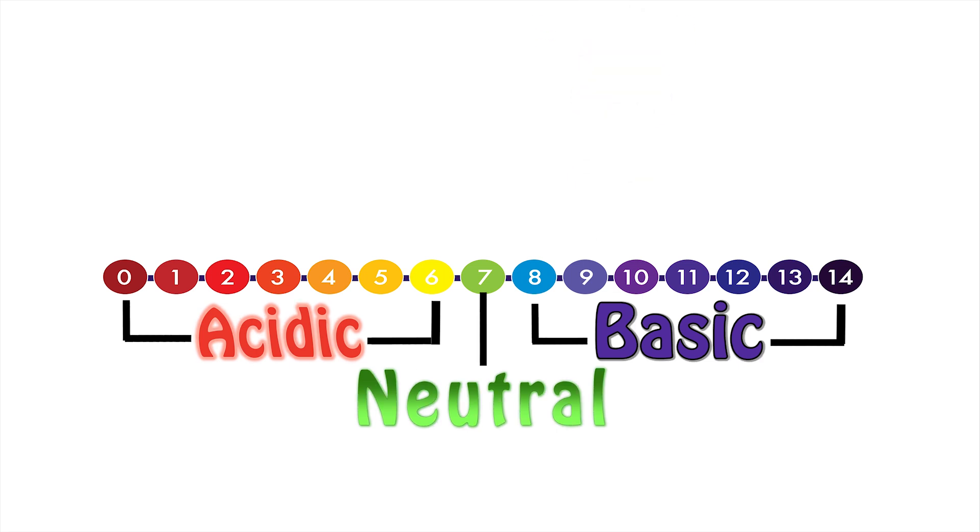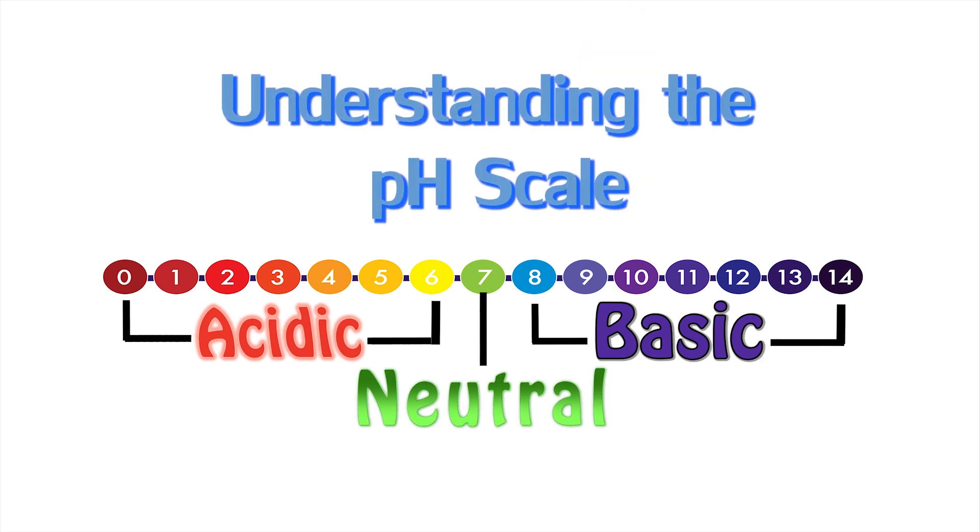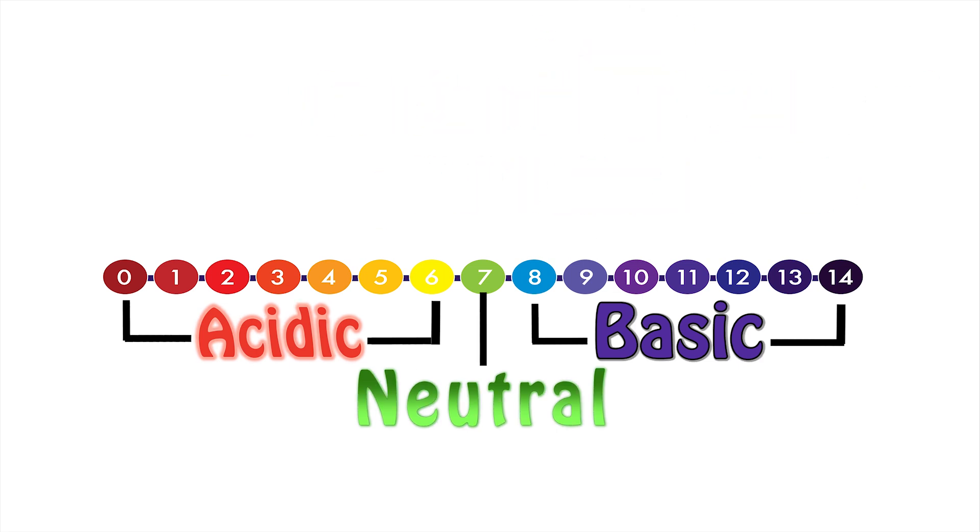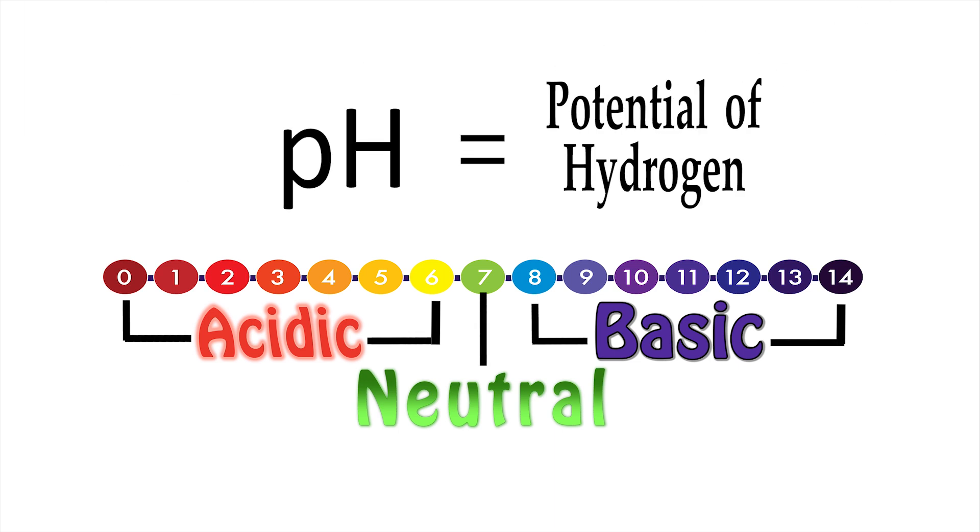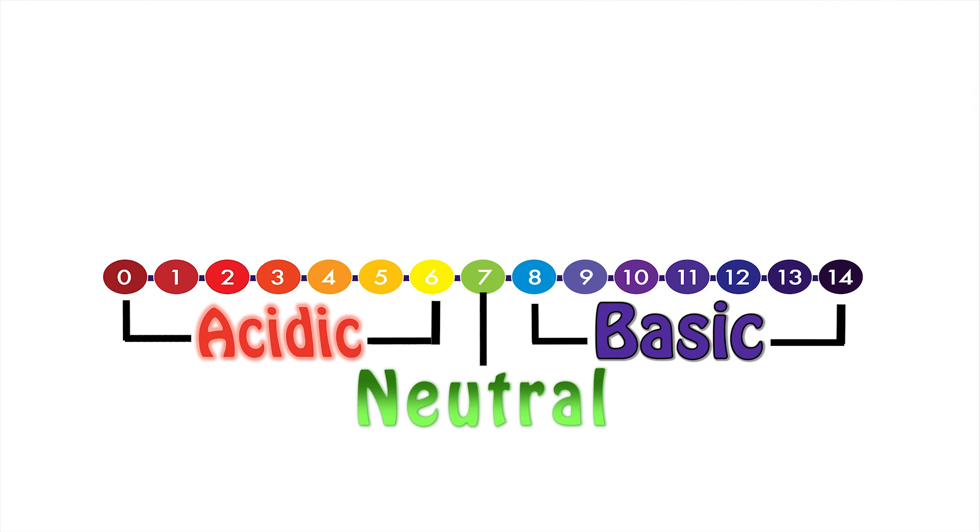To get started, we will review how to read and understand the pH scale. If you remember in chemistry, pH stands for the potential of hydrogen, and the pH scale is used to measure whether a liquid is acidic or basic.